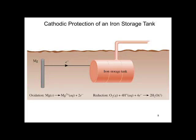We can protect iron by having a sacrificial anode. In this case, we show a magnesium anode, where the magnesium is being oxidized to magnesium 2+, and it allows the reduction of oxygen without interfering with the iron. So the iron storage tank is protected by the magnesium electrode.